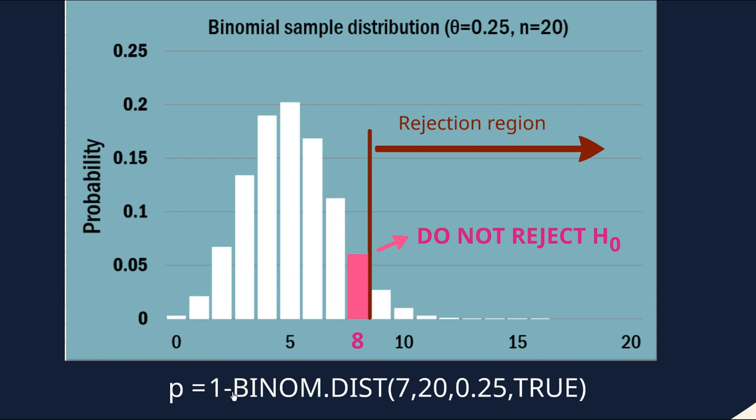And by putting true in the final argument of this function, that tells Excel to provide us with the cumulative distribution function, as opposed to the probability mass function, which would just be the singular individual heights of the bars. So you can do this on Excel. I'm sure you could do it on any other piece of statistical software, and it's probably less clunky than this.